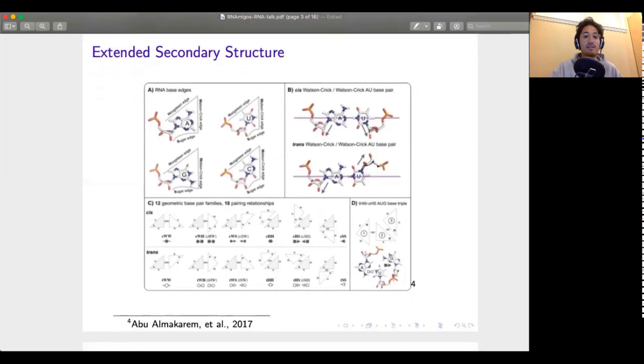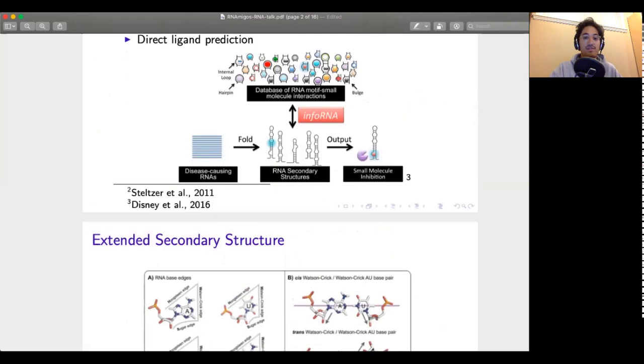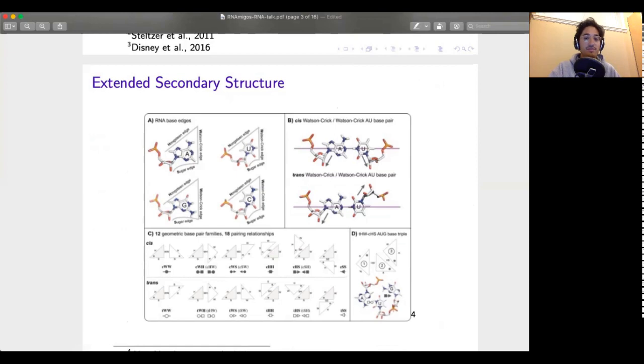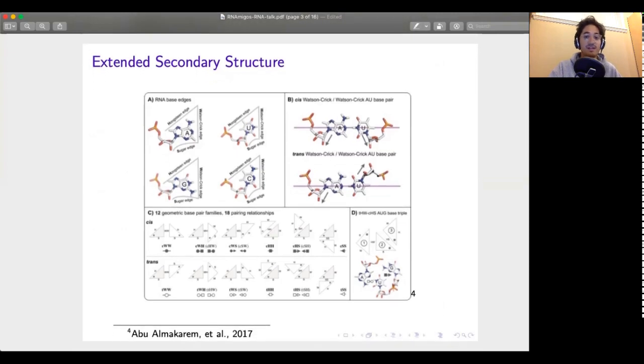For this we look at the extended secondary structure which essentially says if we look at the way two nucleotides interact there's more than one way that this can happen. There's actually 12 different orientations that these can be in and if we include these into the secondary structure annotation we get a better idea of what the 3D structure looks like. Usually we think of the standard 2D structure as being made up of canonical interactions, Watson-Crick pairs, but we can actually fill it in with a larger range of interactions using what we call the extended secondary structure.